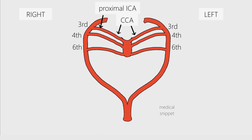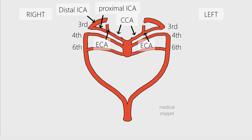The proximal part of the internal carotid arteries is formed by the third arch. The external carotid artery arises from a sprout of the third aortic arch. The dorsal aorta between the third and fourth arches disappears, so the distal internal carotid artery is formed by the cranial portion of the dorsal aorta.